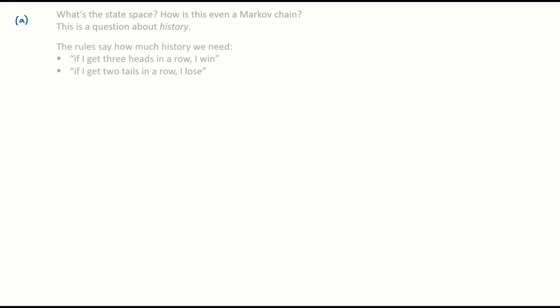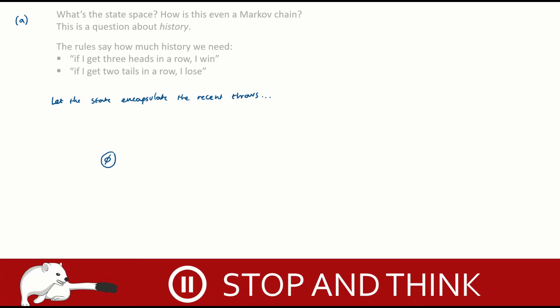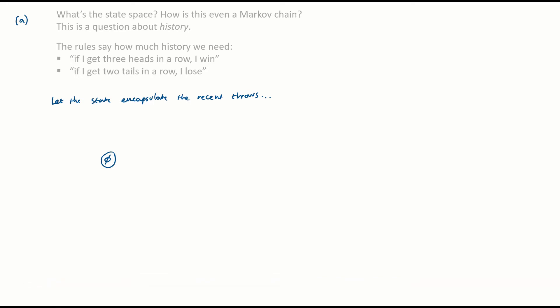The rules say how much history we need to keep with us, and the hints give us a pretty clear guide. The rules say: if I get three heads in a row I win; if I get two tails in a row I lose. So I need to keep enough history to represent these two possibilities. Here's the starting state where I haven't thrown anything yet. Now see if you can fill in the rest. After one more throw, either the next throws are heads or tails, and after that again either there's a head or a tail.